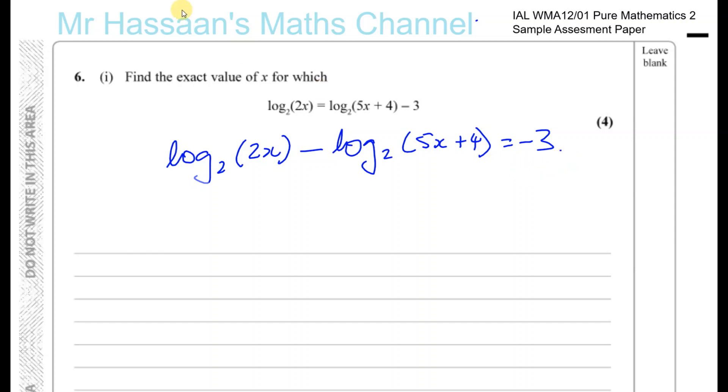Okay, in fact what I'll do to make life a bit less complicated is I will do the opposite. I will make this 3 equals and I'll say log to the base 2 of 5x plus 4 minus log to the base 2 of 2x. Just to make life easier for us.